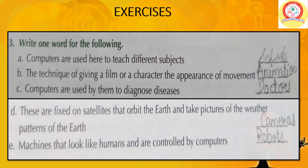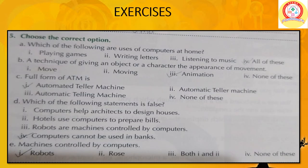On page number 13, Question 5 — Choose the correct option. A: Which of the following are uses of computers at home? Answer: All of these — playing games, writing letters and listening to music. B: A technique of giving an object or a character the appearance of movement — Answer: Animation.